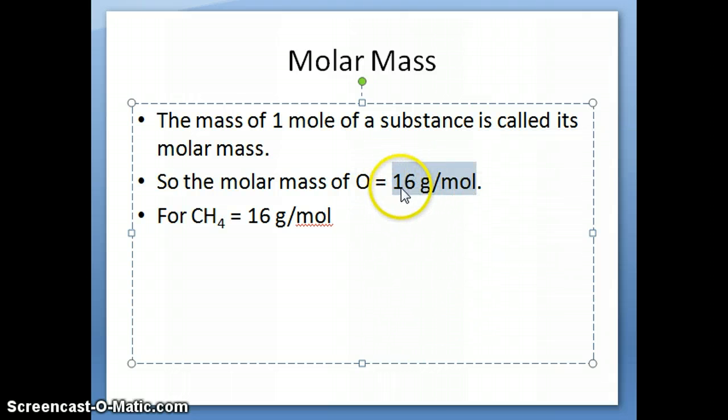It's expressed as per mole of substance, so we usually write it as 16 grams per mole. This means that there's 16 grams of oxygen in one mole of oxygen. Similarly for methane, it would also be 16 grams of methane in one mole of methane.